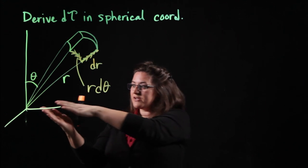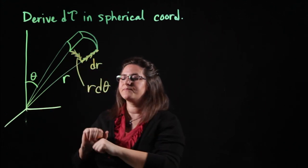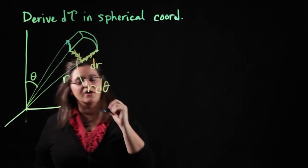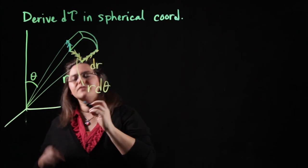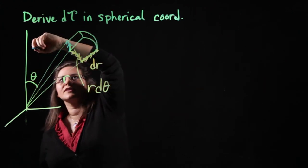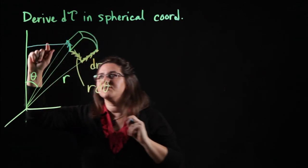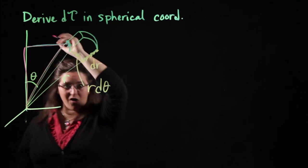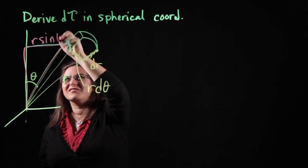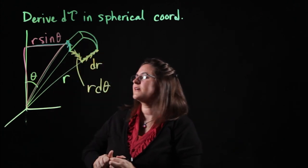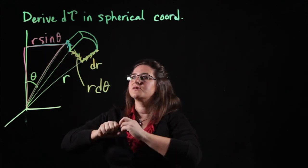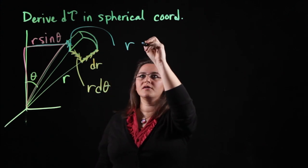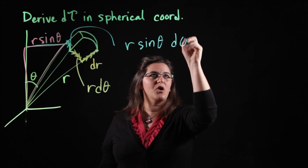We have to also include the radial distance from the origin around which this is being rotated. This other distance is not d phi, nor is it r d phi — it's a little bit more than that. The radius that this is rotated around is actually this distance here, and this distance is not r. Instead, you can see from this triangle that this distance is r sine of theta with a little trigonometry. Now we have the radius around which we're going to rotate that angle. So this distance, the one in blue, is r sine theta — that's the radius — multiplied by the small bit of angle d phi around which we're rotating.